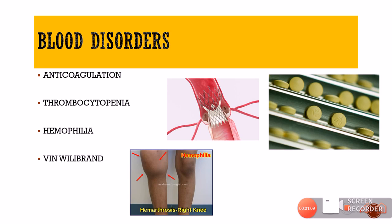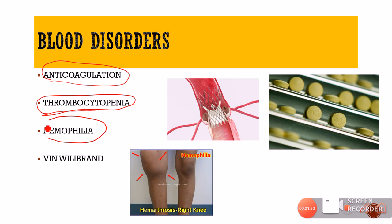Blood disorders can also cause vitreous hemorrhage. Patients on anticoagulation — common in those on dialysis or post-stent with cardiovascular disease — are at higher risk. Patients with coagulation problems such as thrombocytopenia or hemophilia are more prone to bleeding. In such patients, general examination may reveal findings like hemarthrosis with recurrent knee swelling after trivial trauma, reflecting their increased bleeding tendency and reduced ability to clot.